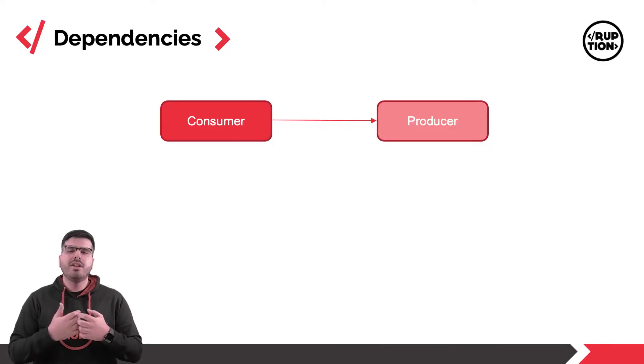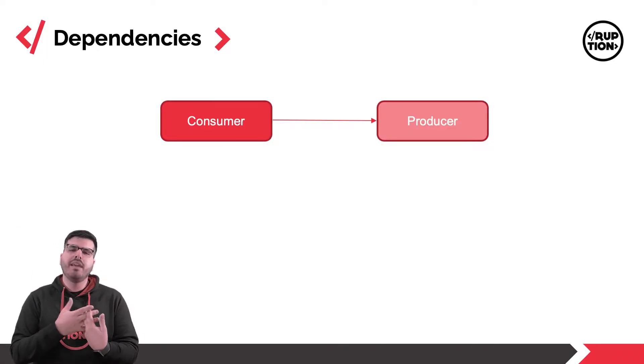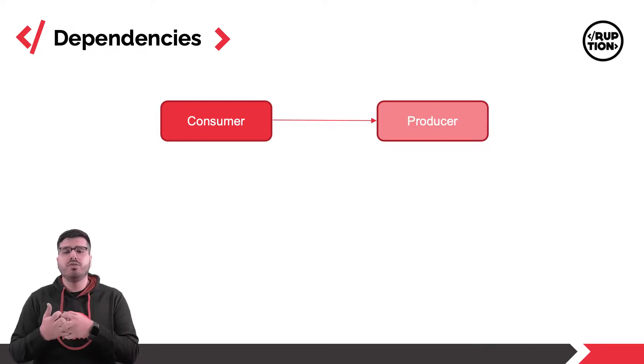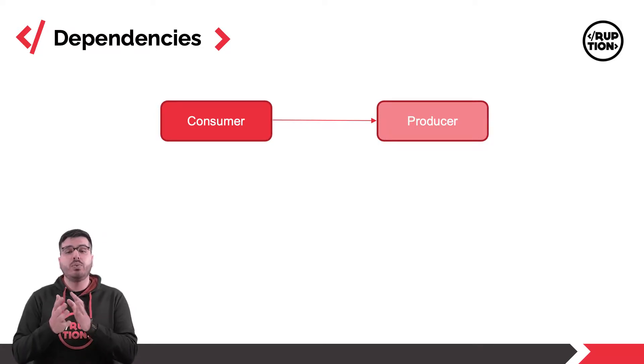Hi Disruptors! On today's video we are going to be looking at strong and weak references — what is the difference between them and what creates these types of dependencies. A dependency is a state of relying on someone or something else. In OutSystems this concept is applied to modules when we reference something between them.